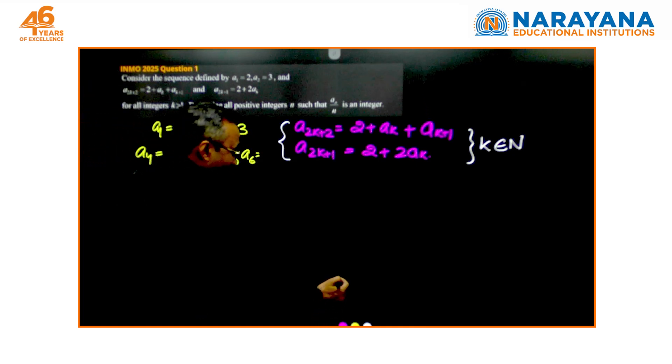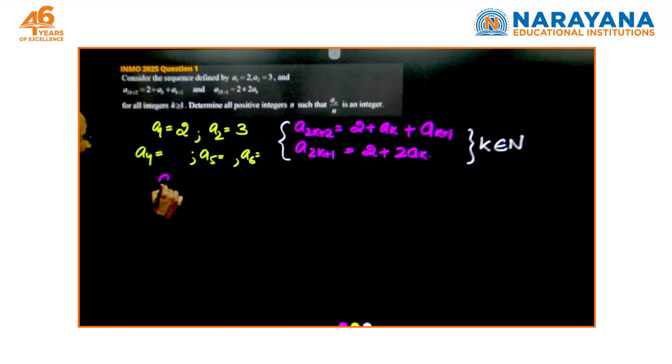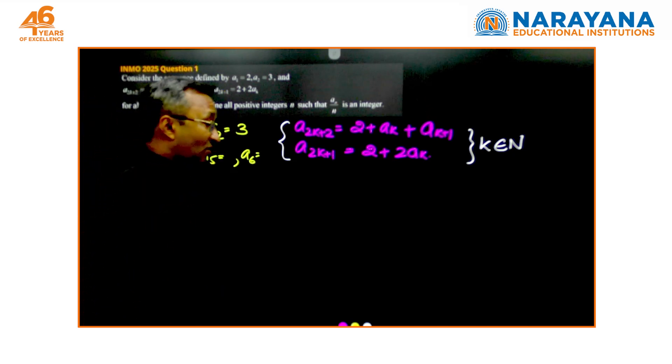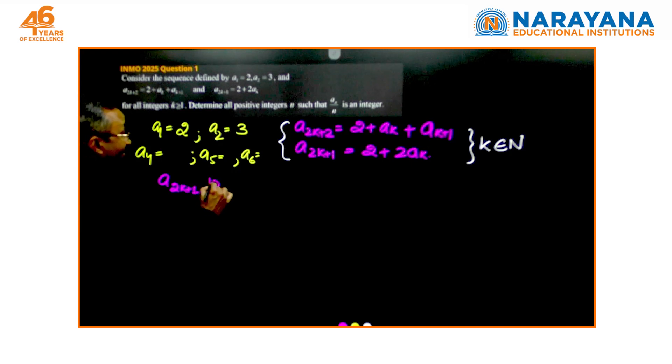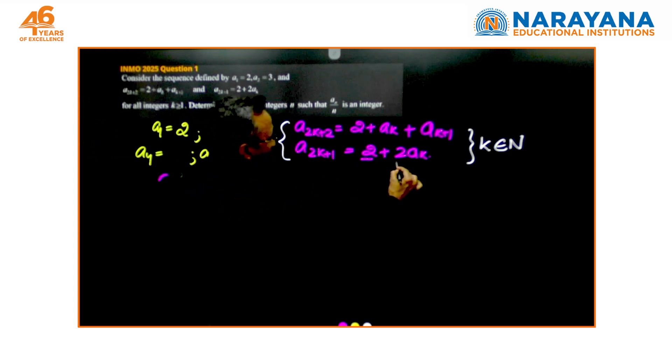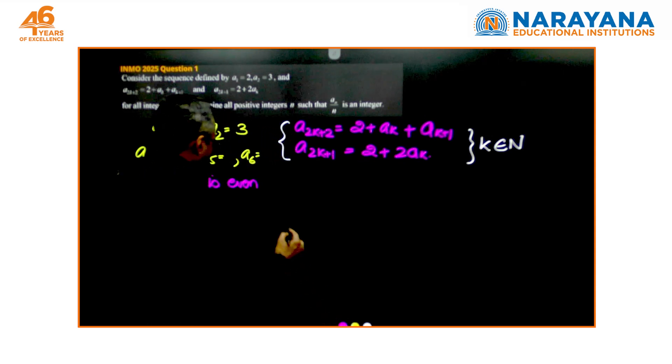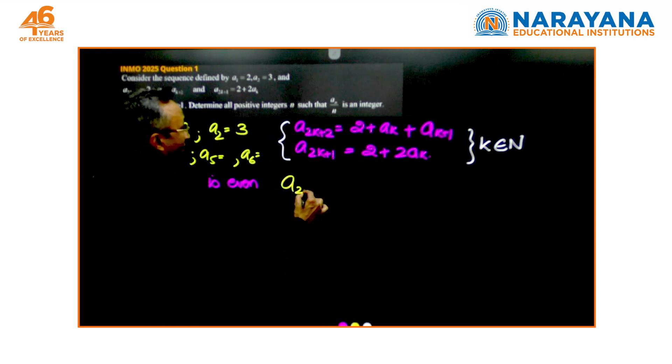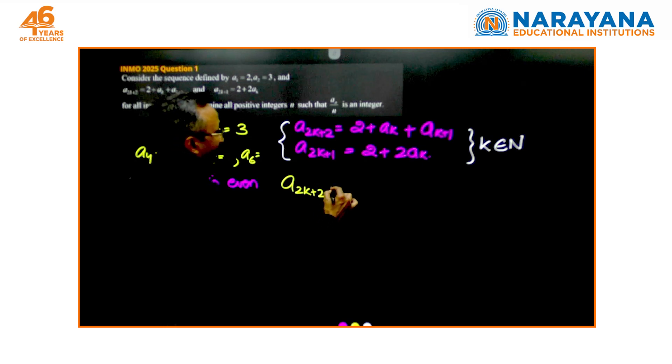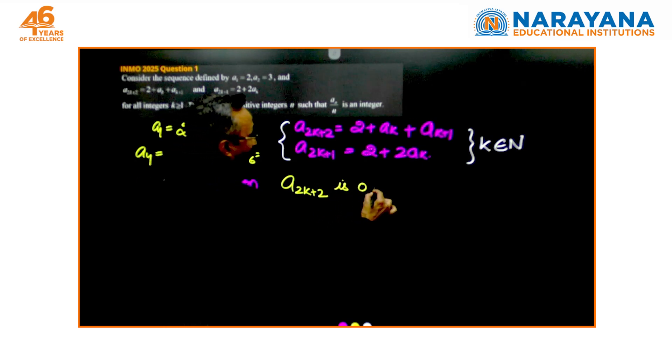a2k+1, that means when 2k+1 which is odd is necessarily even because 2 is here in both the terms. And simultaneously a2k+2 is odd, why is it so?